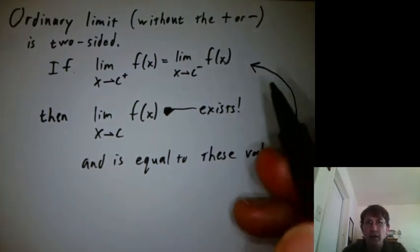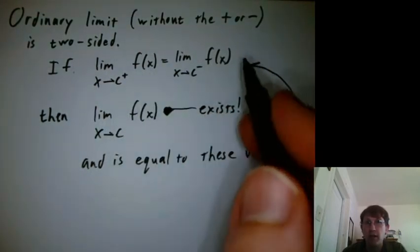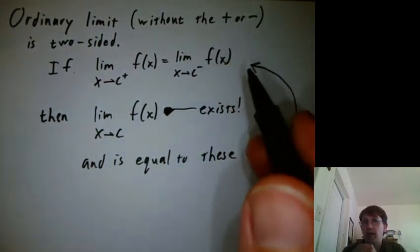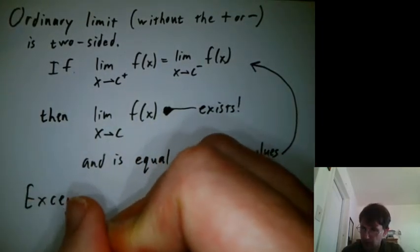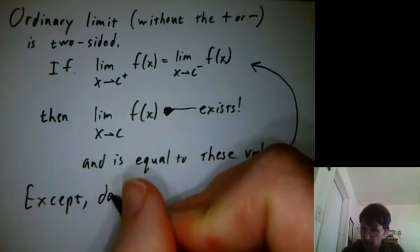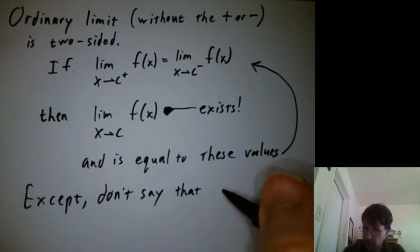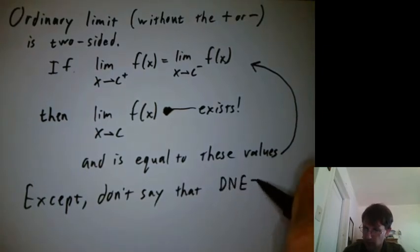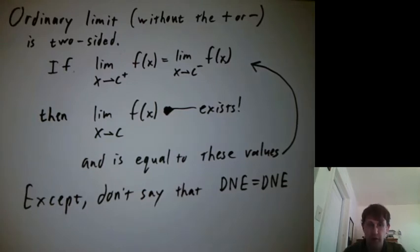The caution is that if one of these limits is DNE and the other is DNE, we can't just say they're equal because they're both DNE. And we'll show an example of that later.